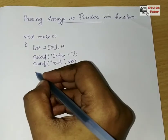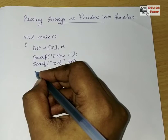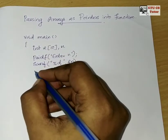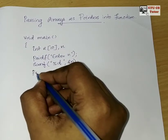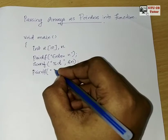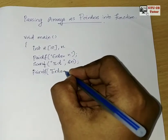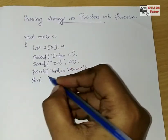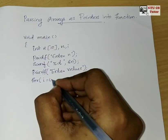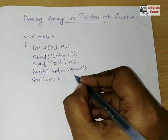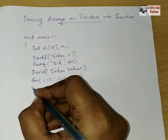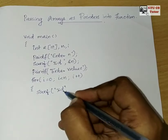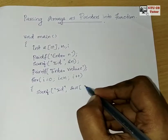After scanning the size, what I am going to do is use a loop to read the array elements. So, giving a printf 'Enter values', then writing a for loop: i equal to 0, i less than n, i plus plus. Inside that, reading with scanf, percentage d, ampersand a of i — using the index variable.